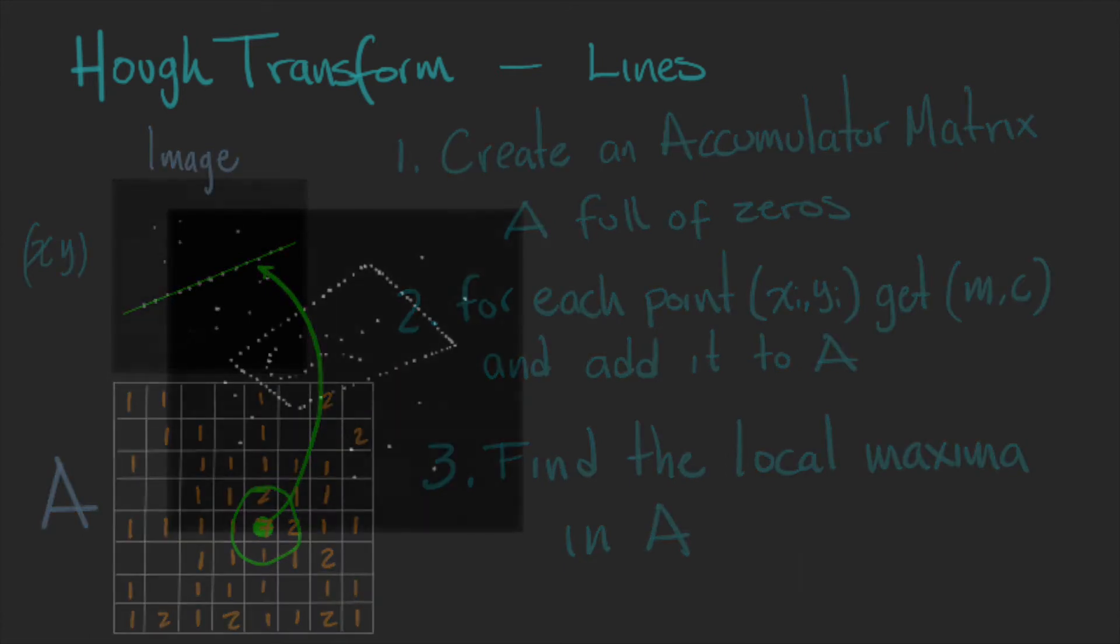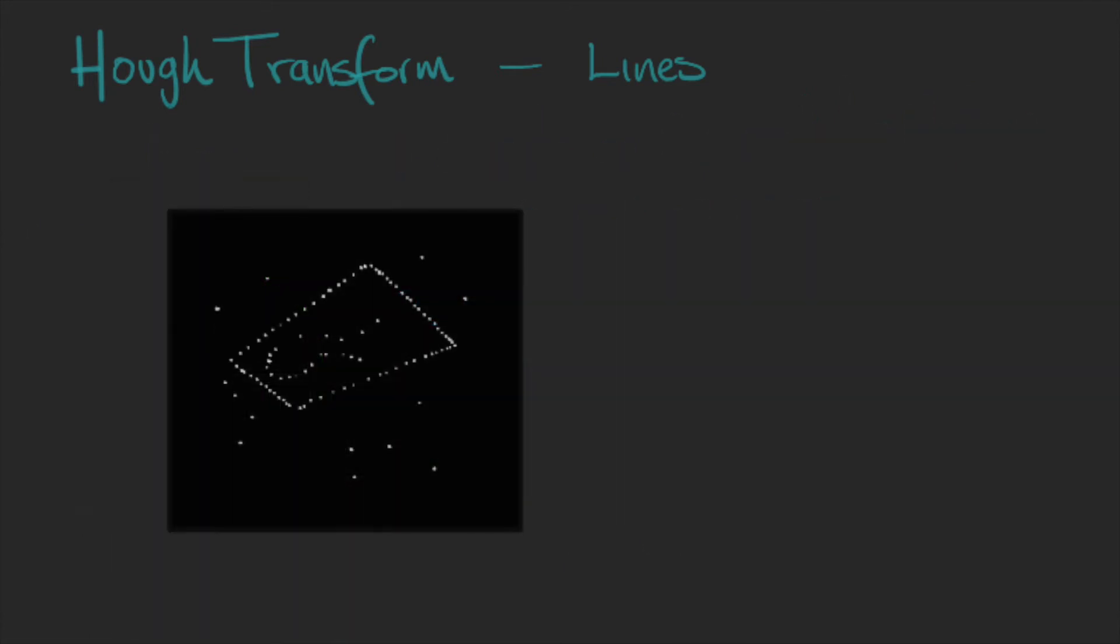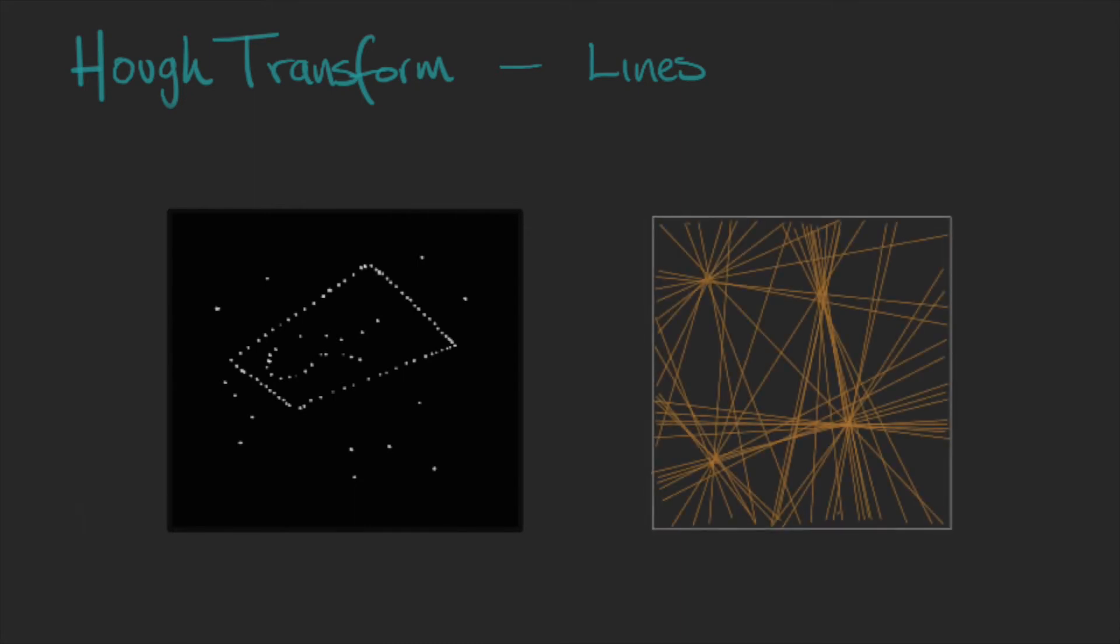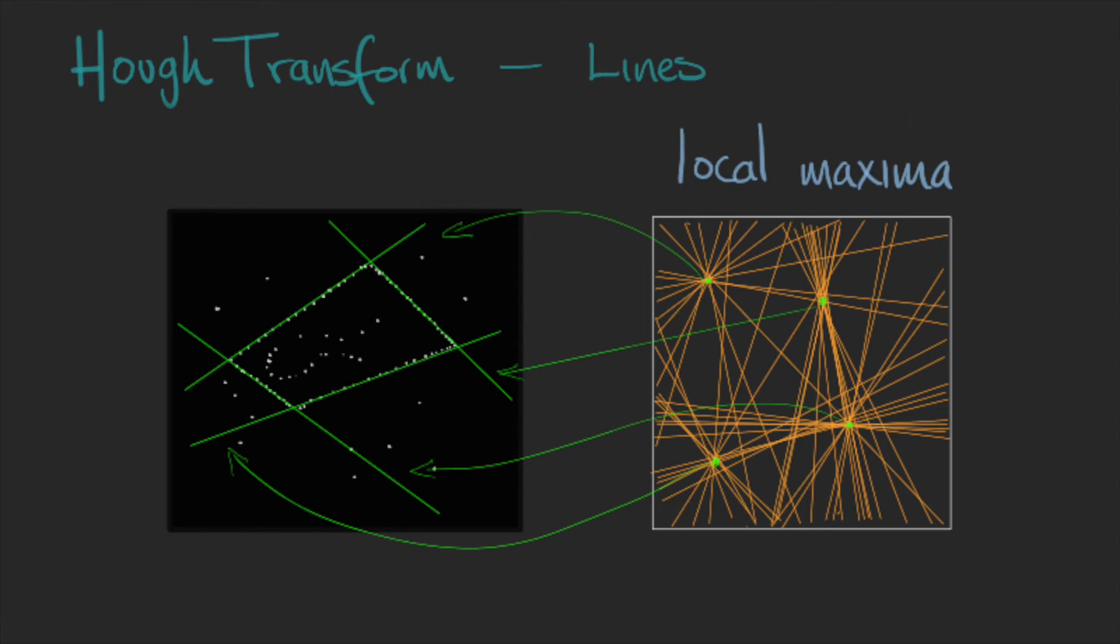So now, if we have something like this, we will find something like this in the accumulator. And we will find 4 points with a significantly higher value compared to the rest on those 4 points that correspond to the 4 lines that we are looking for.